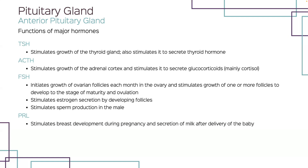Follicle-stimulating hormone, or FSH, stimulates the primary ovarian follicles in the ovary to start growing and continue developing to maturity. FSH also stimulates follicle cells to secrete estrogen. In males, FSH stimulates the seminiferous tubules to grow and form sperm. PRL, or prolactin, in pregnancy will stimulate breast development necessary for eventual lactation. Also, soon after the delivery of a baby, a woman's PRL will stimulate the breast to start secreting milk.